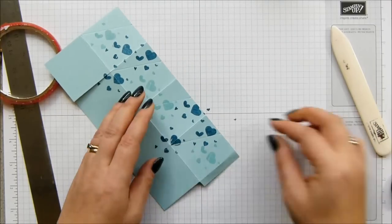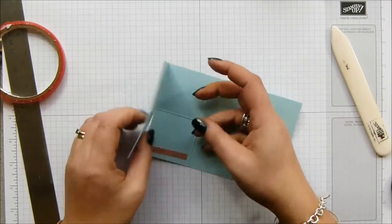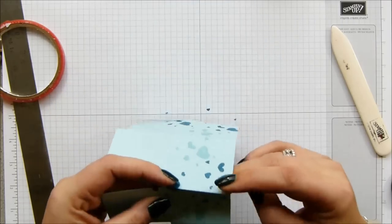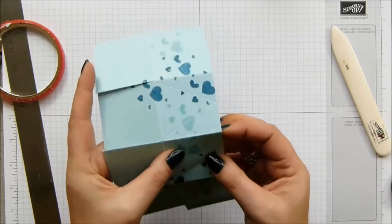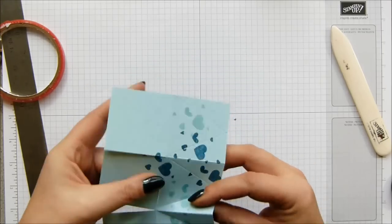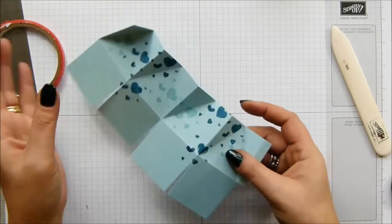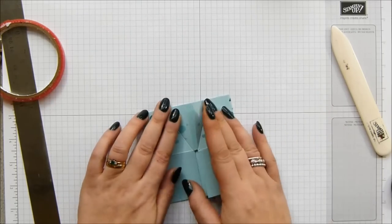And then just peel and seal. Do you know what? I forgot to bend these parts. That was daft, wasn't it? You need to bend your diagonal lines. There we go. Okay. Now peel and seal.